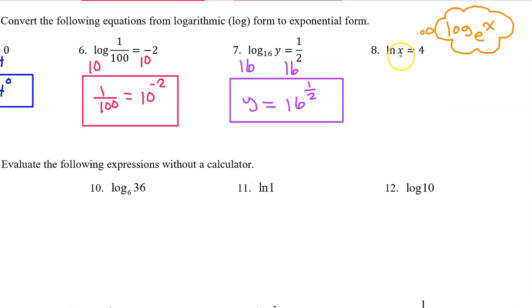Natural log x is really log base e of x. That's why we will drop a base e on both sides of the equation. And the base e and the log base e will cancel each other out, leaving behind just x on the left. x equals e to the fourth power.